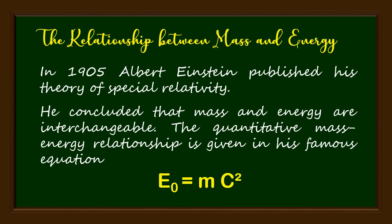In 1905, Albert Einstein published his Theory of Special Relativity. He concluded that mass and energy are interchangeable. The quantitative mass-energy relationship is given in his famous equation, E equals mc squared.